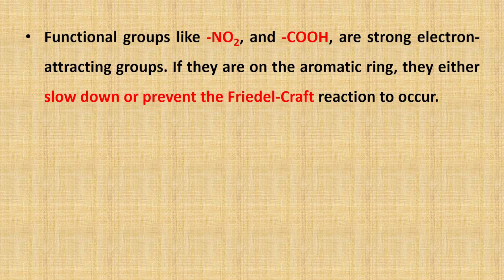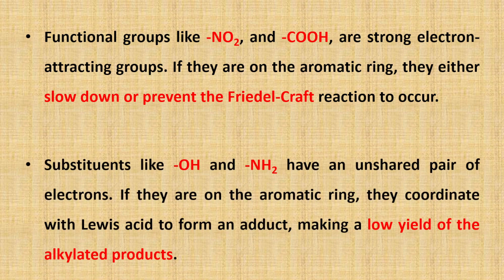Functional groups like nitro and carboxylic acid are strong electron-withdrawing groups. If they are on the aromatic ring, they either slow down or prevent the Friedel-Crafts reaction from occurring. So the functional group should not be a strong electron-withdrawing group. Substituents like hydroxy and amine have an unshared pair of electrons; if they are on the aromatic ring, they coordinate with Lewis acid to form an adduct, making a low yield of alkylated product.